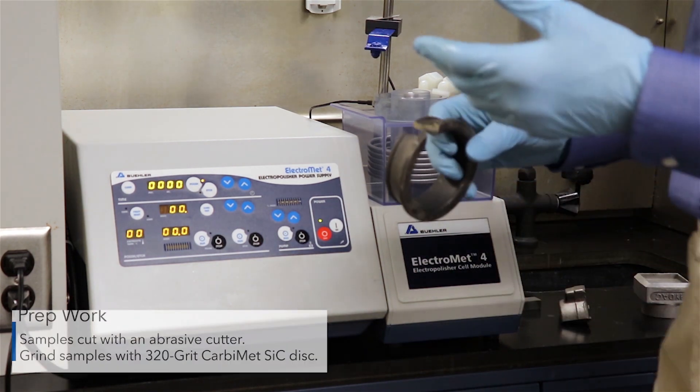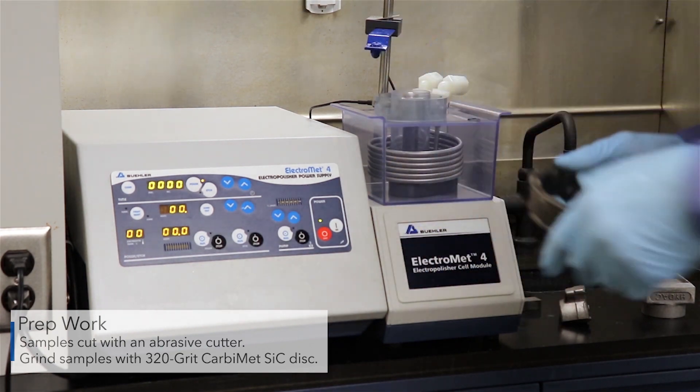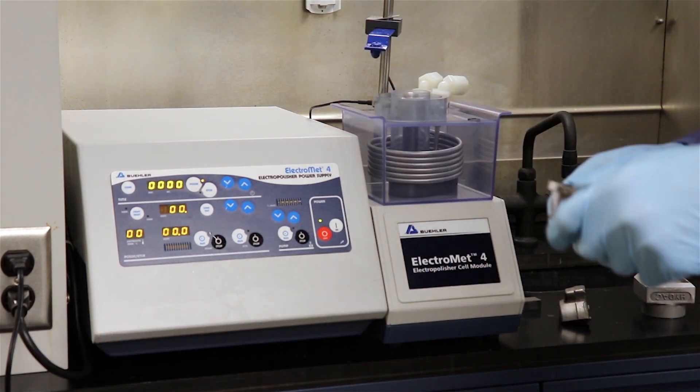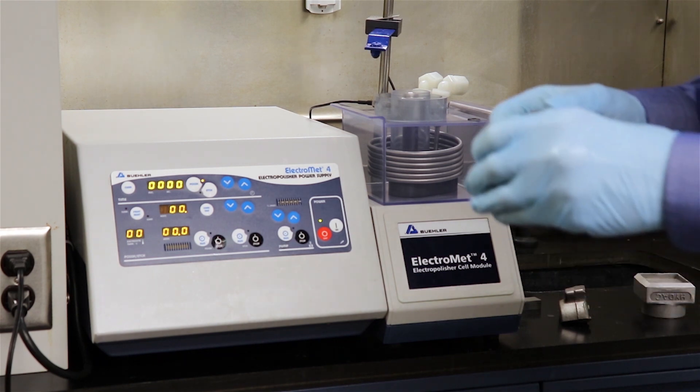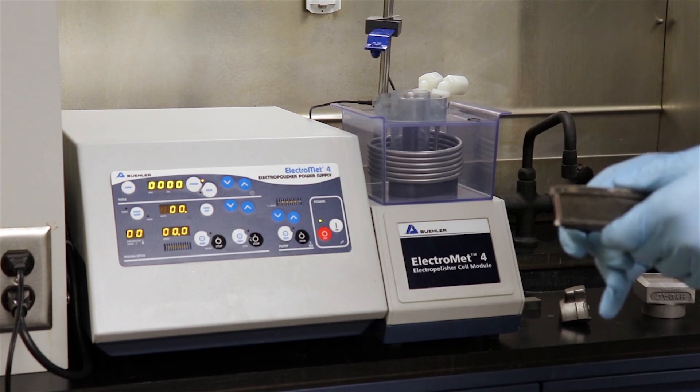You can take a part, cut a section from that part, grind the surface and simply go to the electropolisher and within less than 30 seconds we can get the microstructure. It saves a lot of time, it's very easy in situations where it applies.